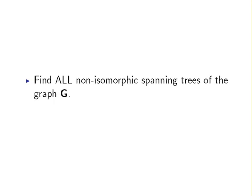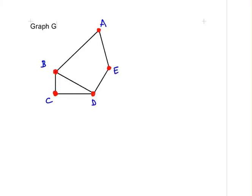So what we're going to do is find all the non-isomorphic spanning trees of the graph G. So there we have graph G with five vertices: A, B, C, D, and E. It has cycles, so it's not actually a tree, but it can have a spanning tree as a subgraph.